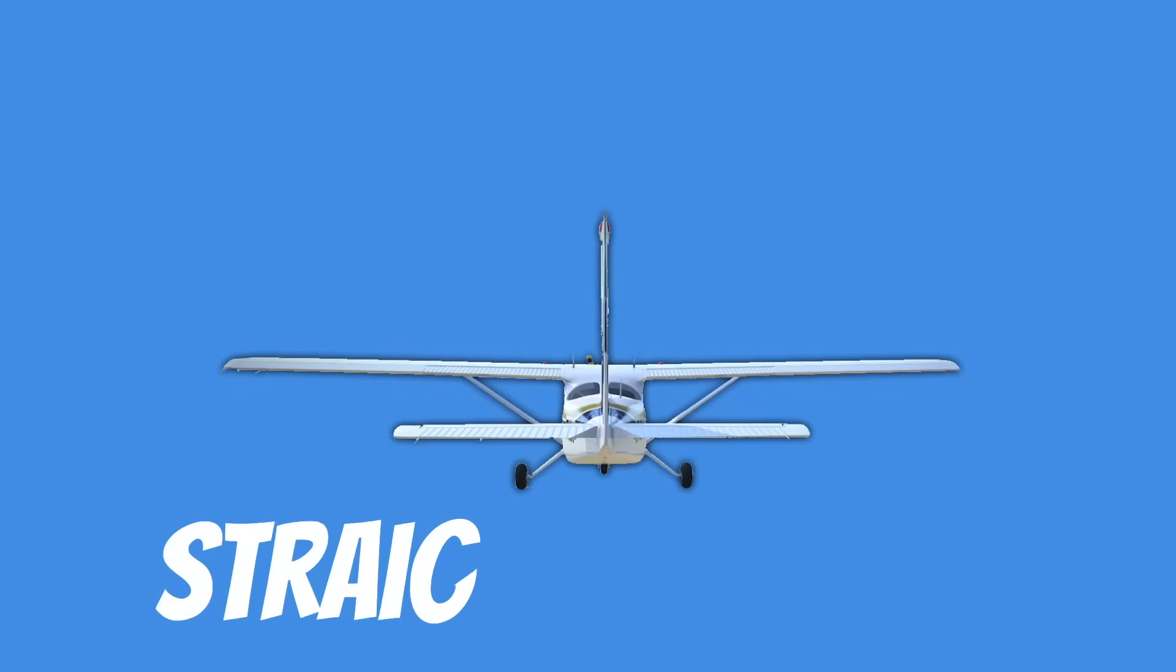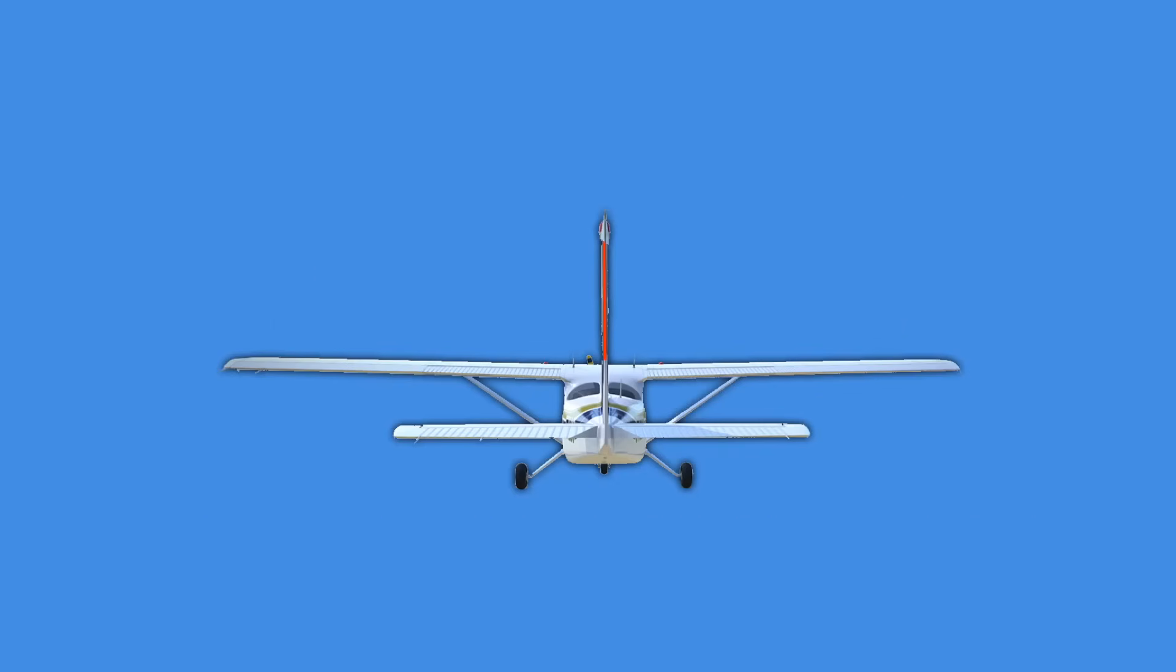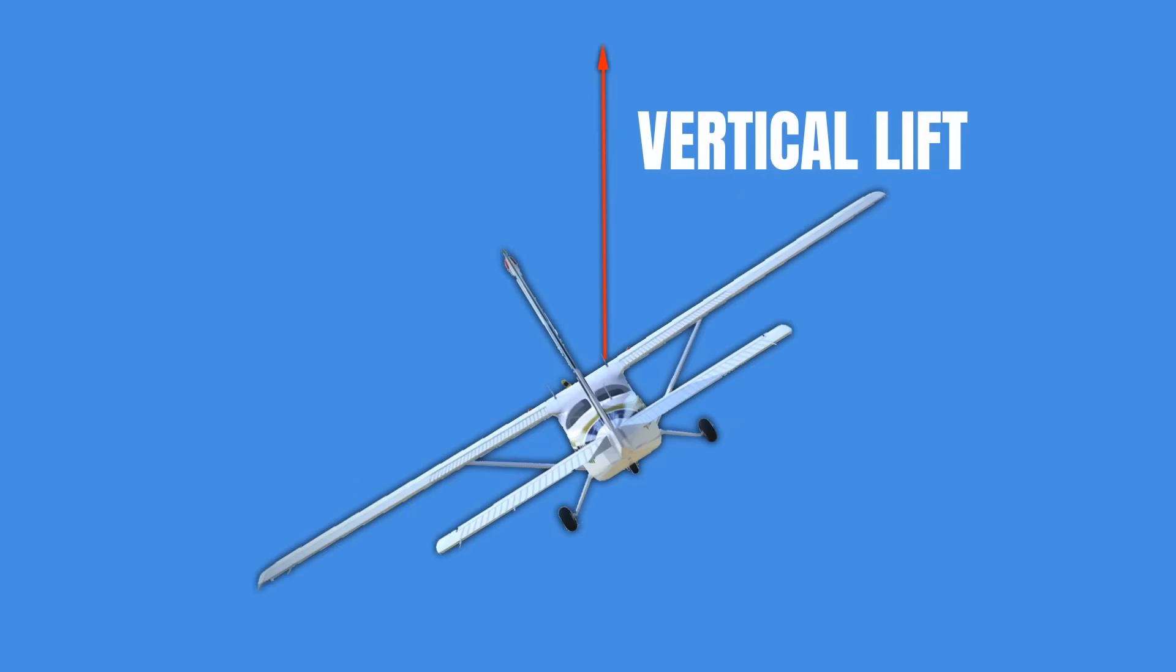When an airplane is in straight and level flight the lift that your wings produce basically goes straight up. And when an aircraft is in a level attitude like this we call this vertical lift because it's literally going straight up.